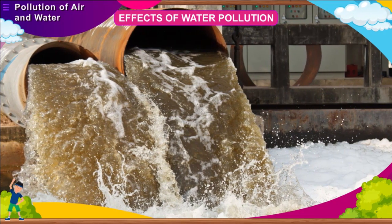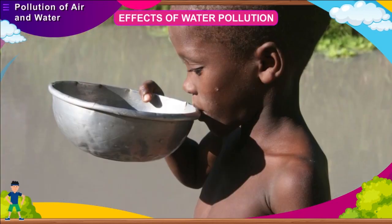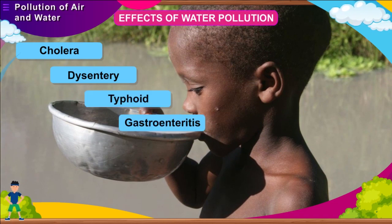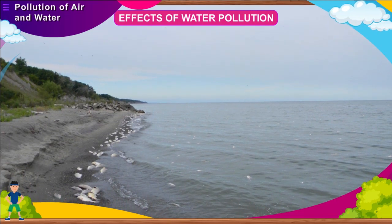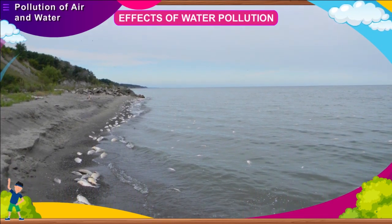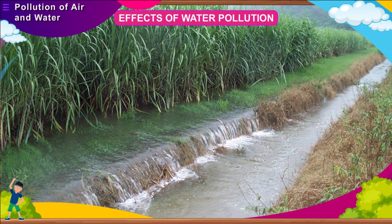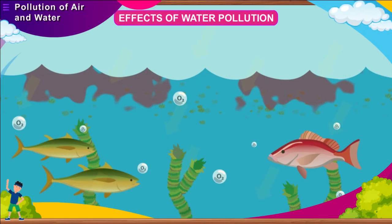Effects of water pollution. Contamination of water affects all living organisms as water is an integral part of all life forms. Polluted water may cause diseases like cholera, dysentery, typhoid, gastroenteritis, hepatitis, diarrhoea and skin diseases. Contamination of rivers with heavy metals like lead, mercury, copper and nickel harms both aquatic and human lives. Residual fertilizers, when washed into water bodies, encourage the growth of weeds on the surface, which use most of the dissolved oxygen and affect aquatic life. The loss of dissolved oxygen from water bodies is termed eutrophication.